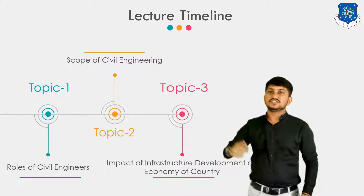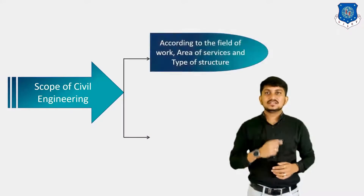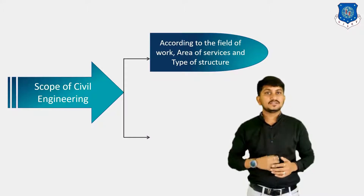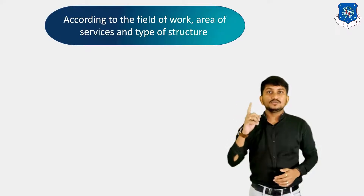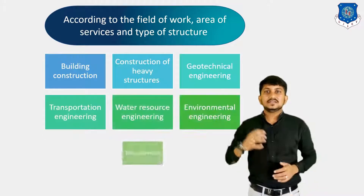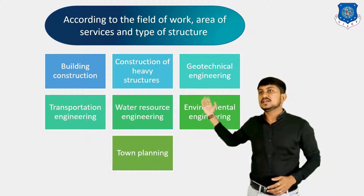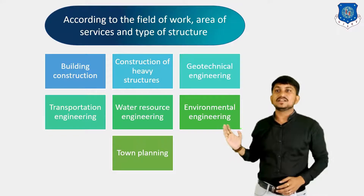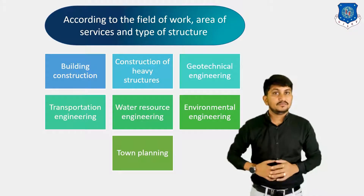The last role is to demolish any structure. Now we will move to our second topic, which is scope of civil engineering. It is divided into two parts: first is according to field of work, area of services, and type of structure; and second is according to function of civil engineering. According to field of work, the scope includes building construction, construction of heavy structures, geotechnical engineering, transportation engineering, water resource engineering, environmental engineering, and town planning.